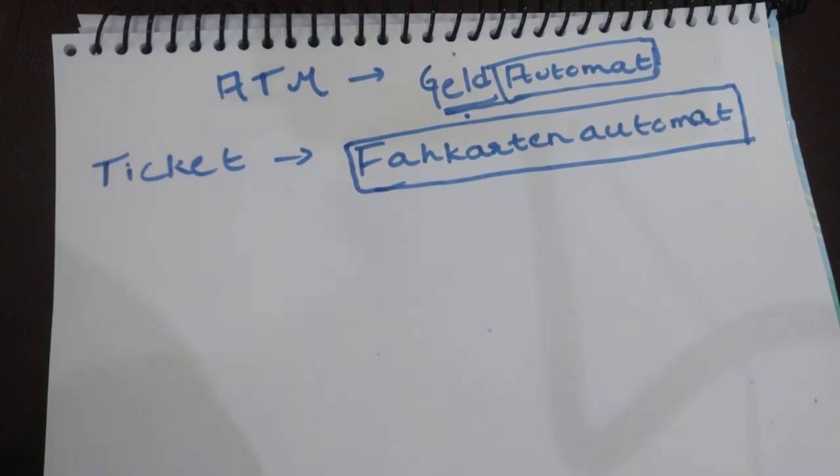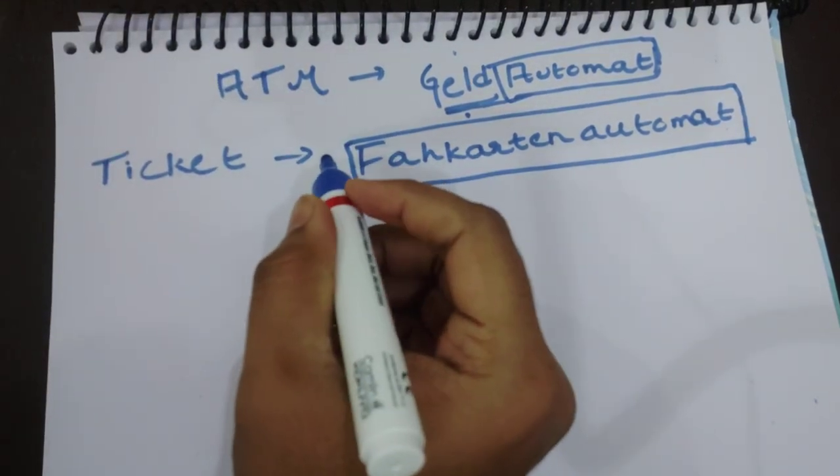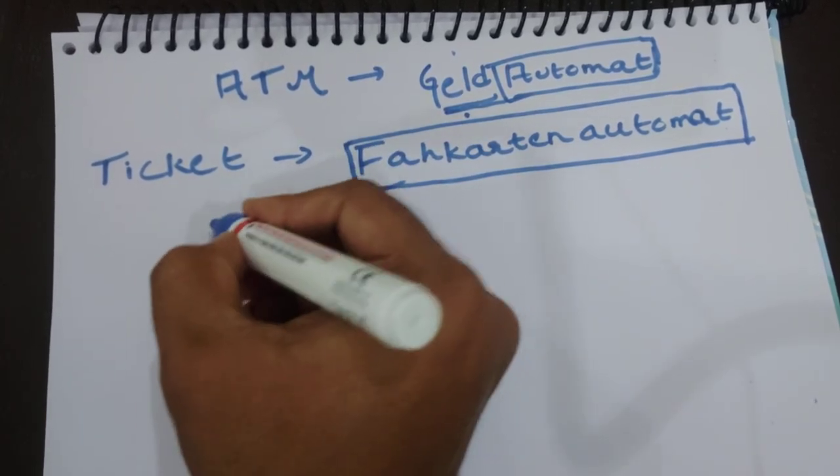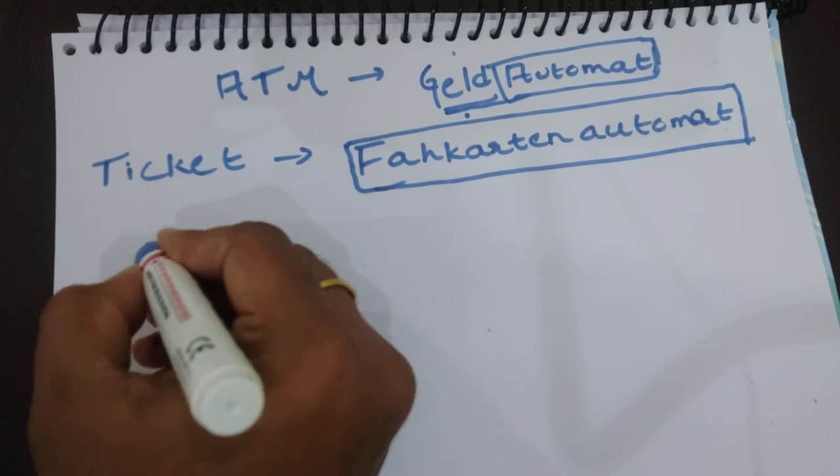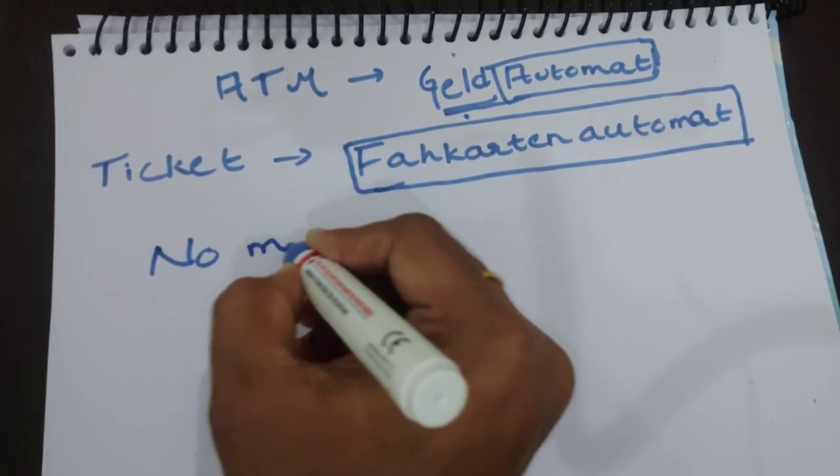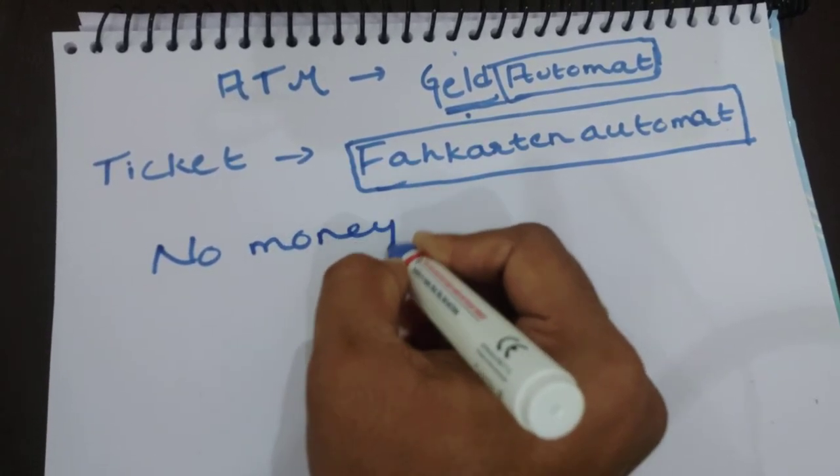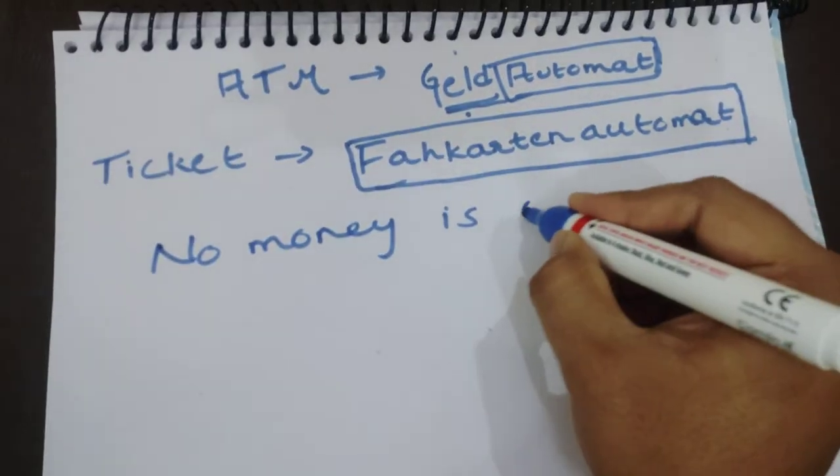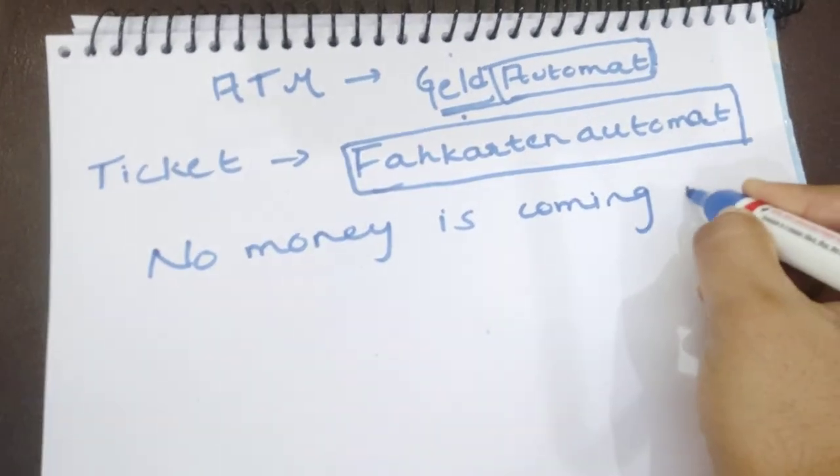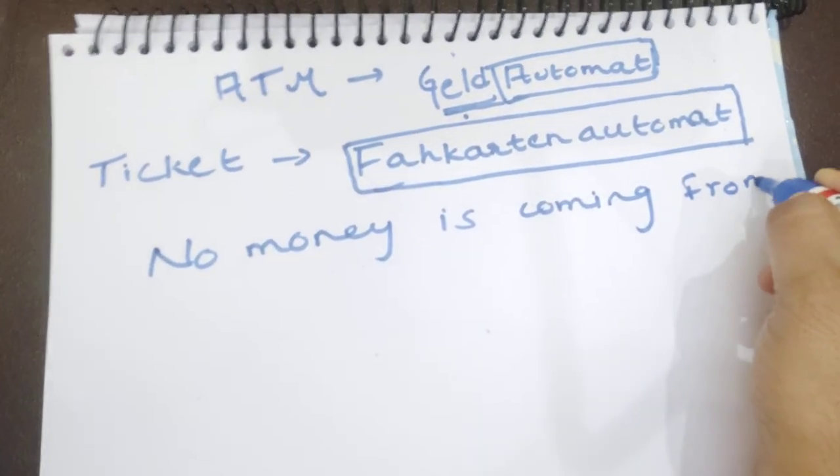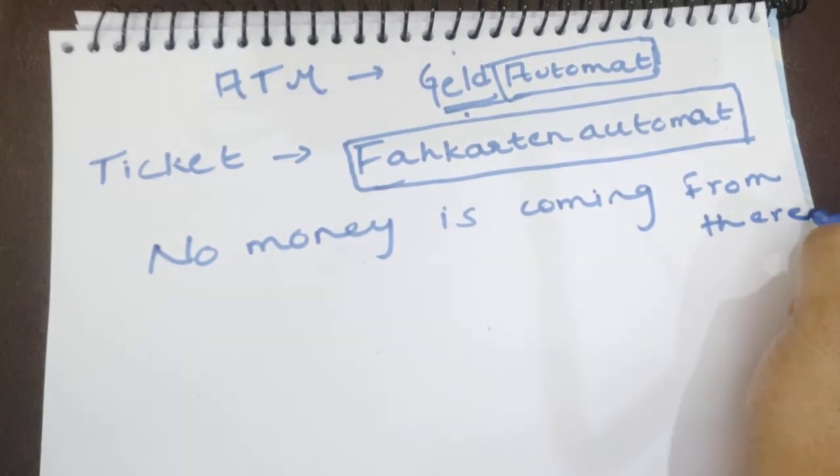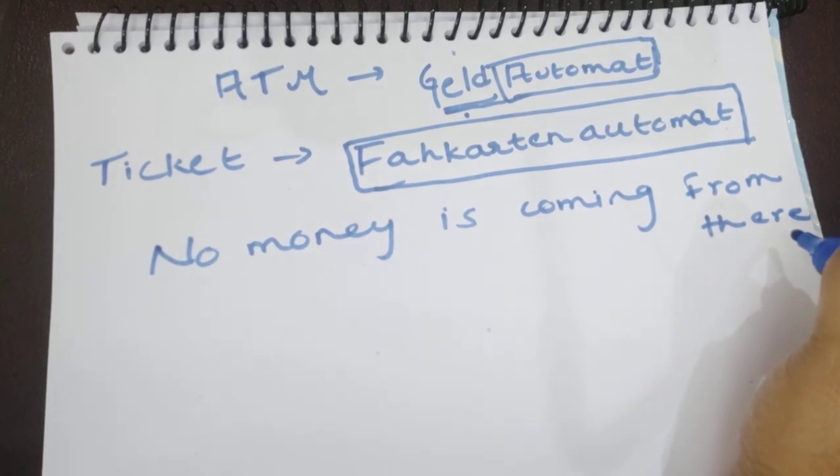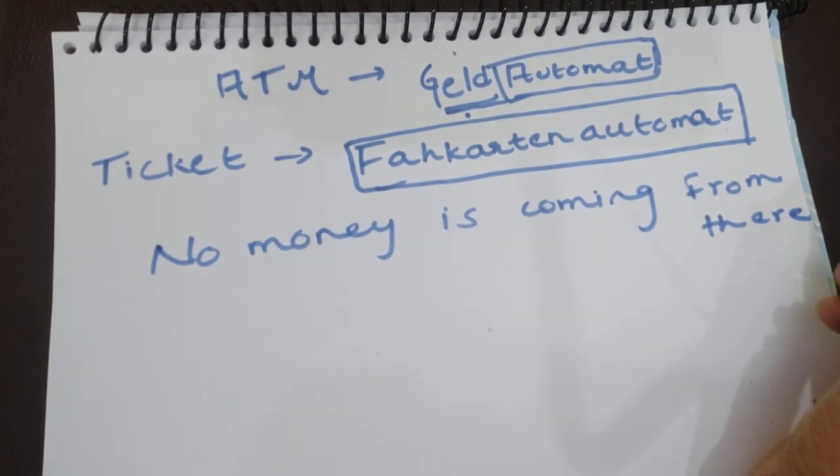Next, I'm going to form sentences so that you get clarity on the sentence system. For example, in German, if you want to say 'no money is coming from there' about an ATM, let me show you how to frame this sentence.